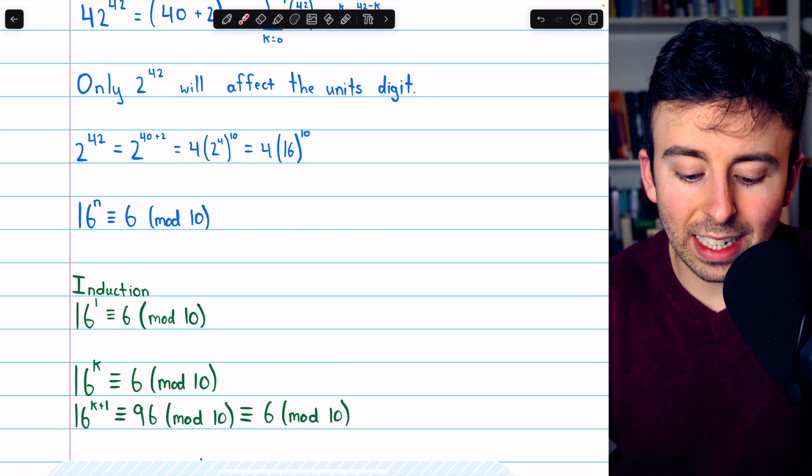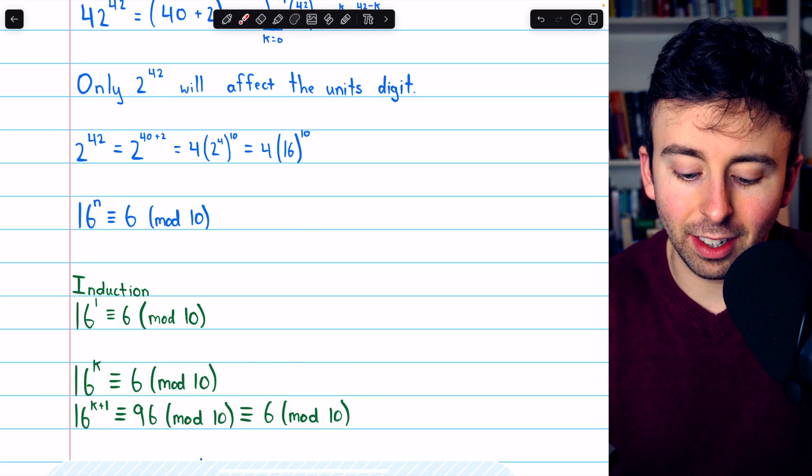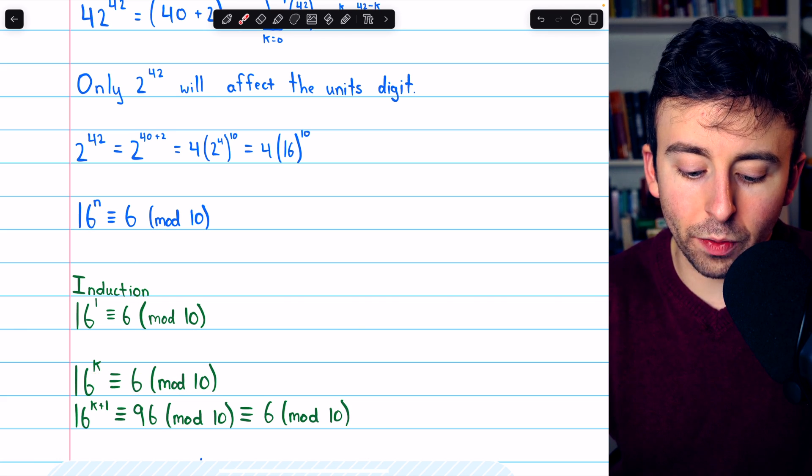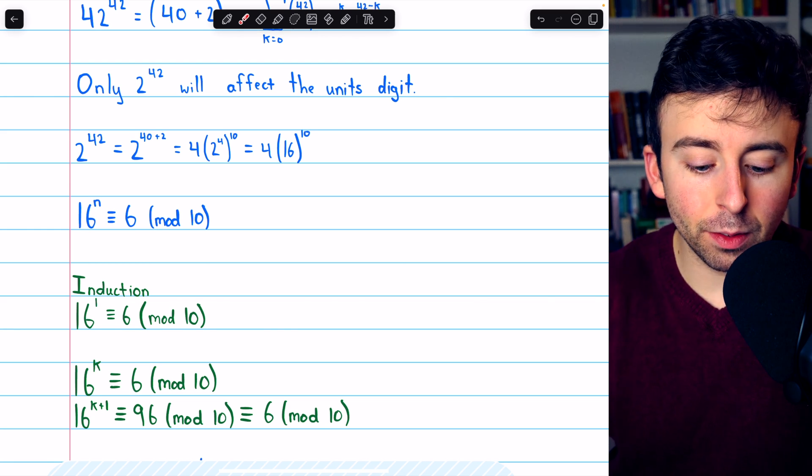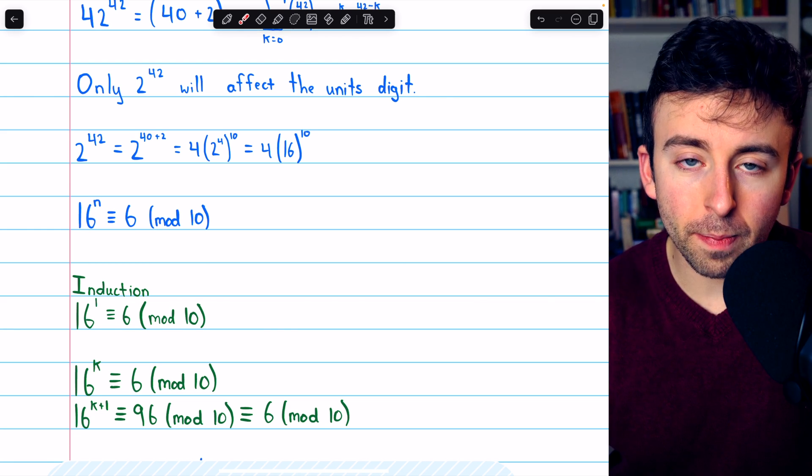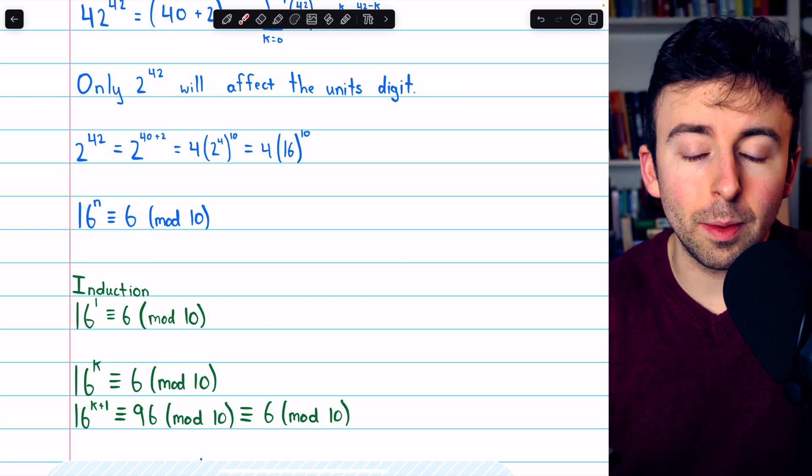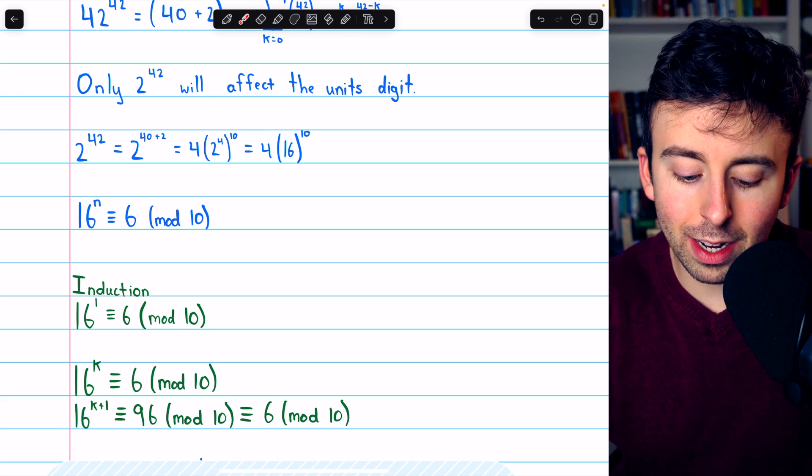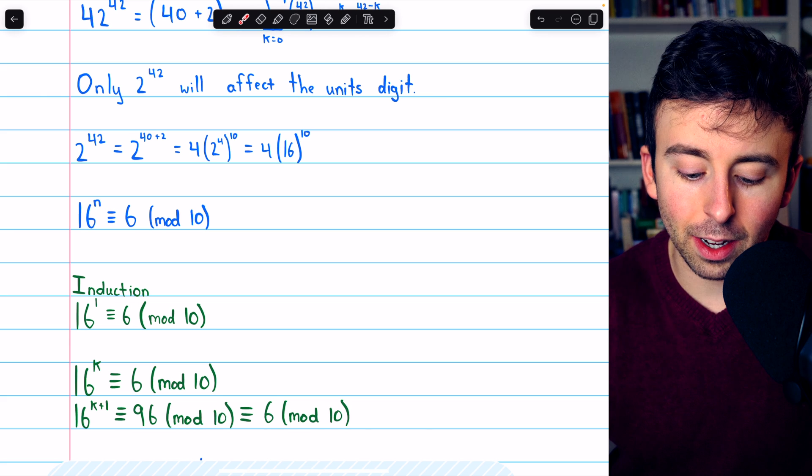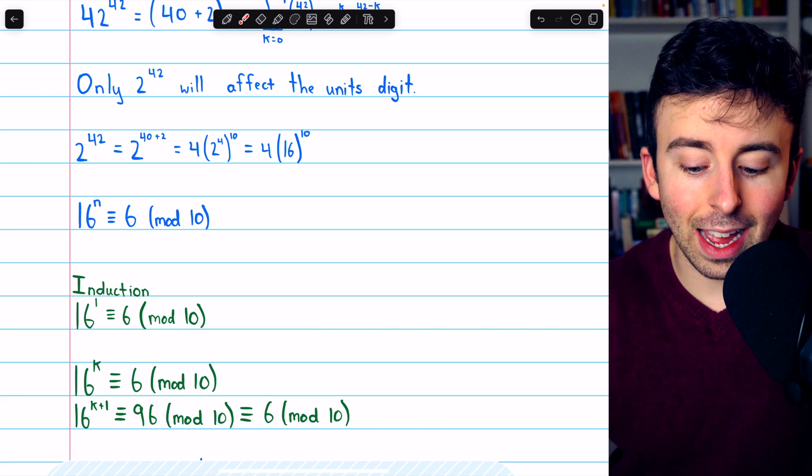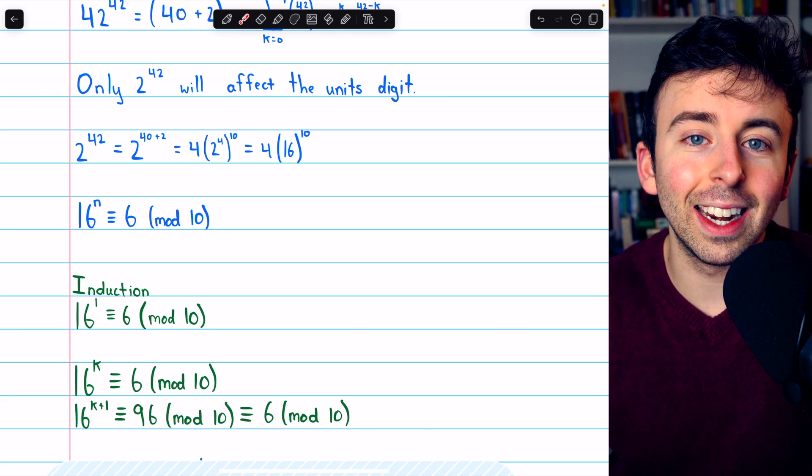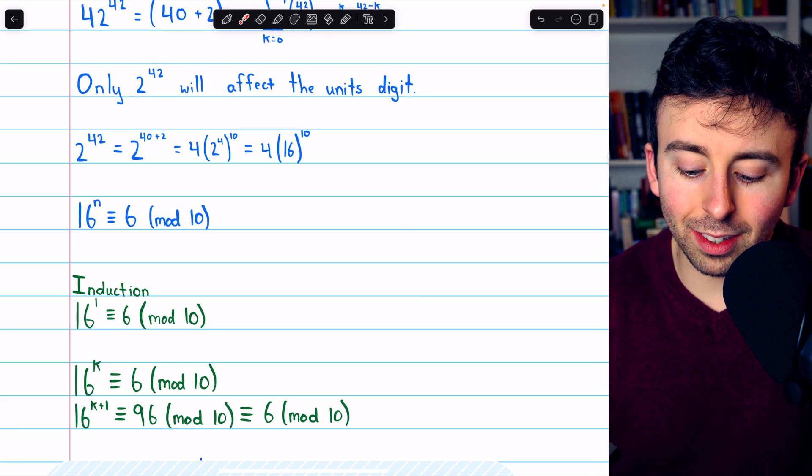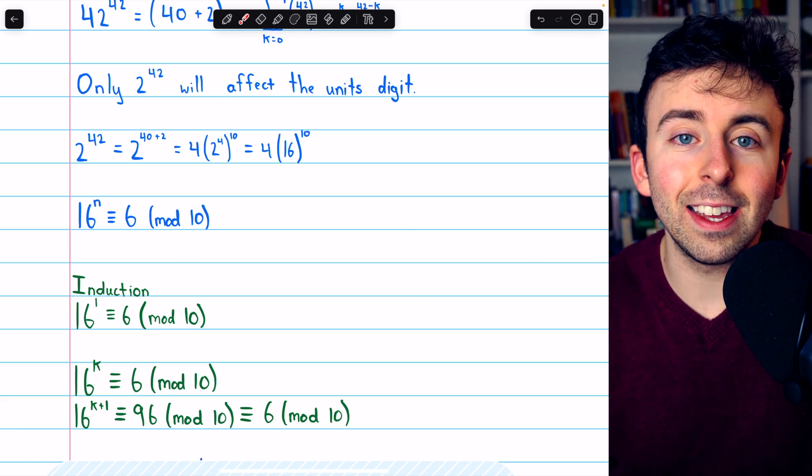Then, if we assume that 16 to the k is congruent to 6 mod 10, we can multiply both sides of this equivalence by 16. On the left, we get 16 to the k plus 1. And on the right, 16 times 6 is 96. So, 16 to the k plus 1 is congruent to 96 mod 10. Obviously, 96 mod 10, though, is congruent to 6 mod 10. And so, we have that 16 to the k plus 1 is congruent to 6 mod 10. That completes the induction step.